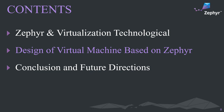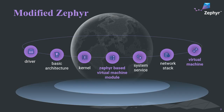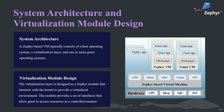Now we introduce the second part: the design of a virtual machine based on Zephyr. For the entire Zephyr system, we have added a virtualization management module to support virtual machines. Except for this module, other modules are consistent with the original Zephyr. The overall system architecture includes the Zephyr host OS, the virtualization management module, and the upper virtual machine. The virtualization layer is designed as a Zephyr module that interacts with the kernel to provide a virtualized environment.